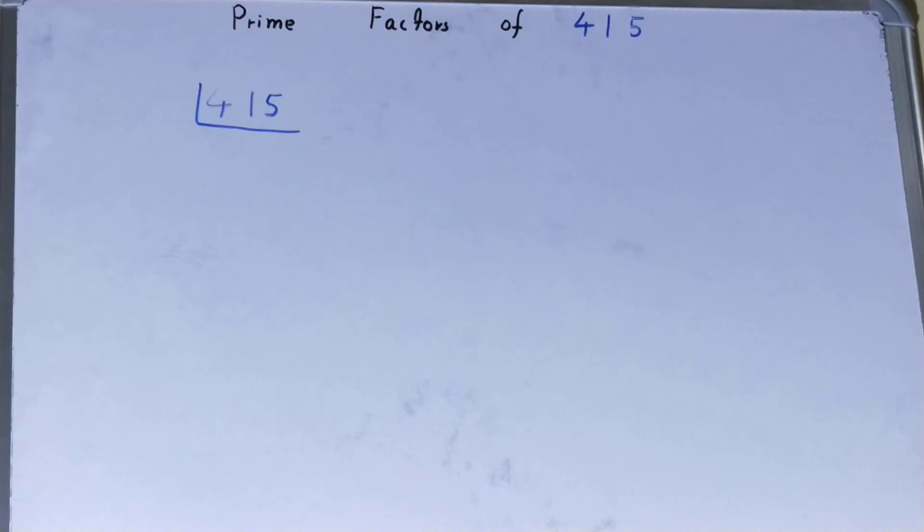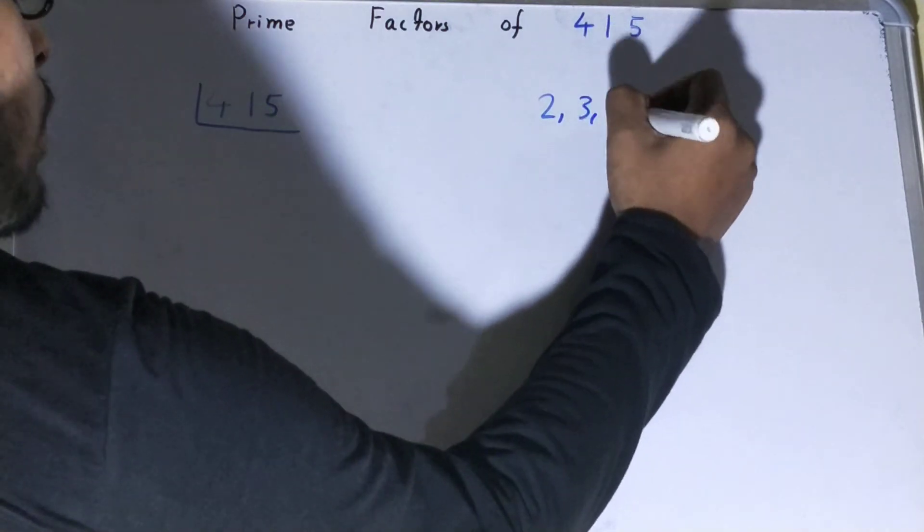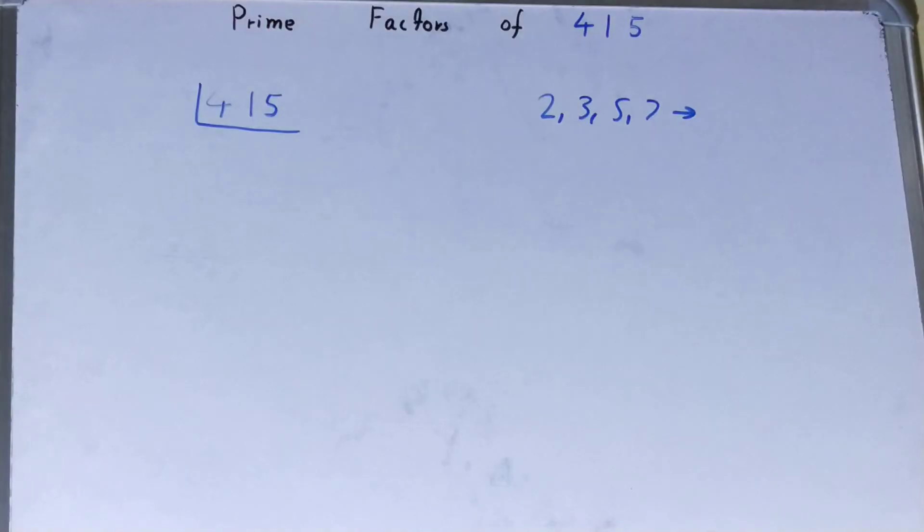So your prime numbers are numbers that are divisible by one and themselves only, like 2, 3, 5, 7, and so on. We are going to start with the lowest prime number we have, that is 2.